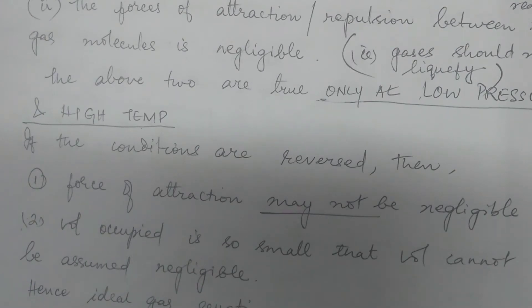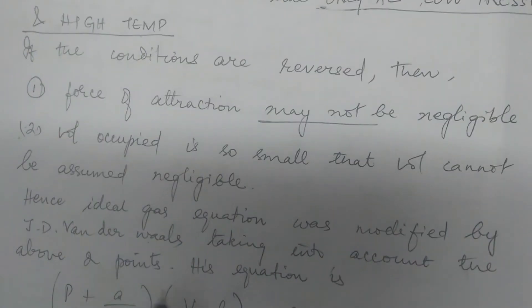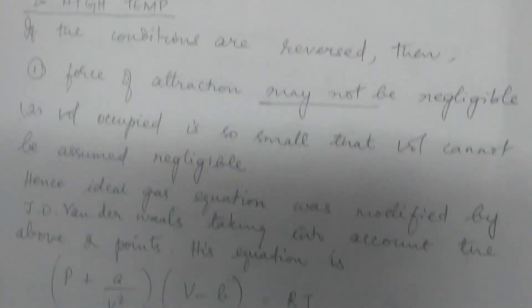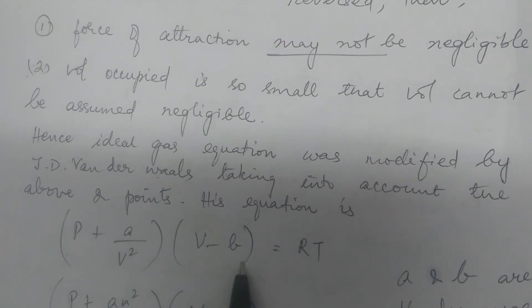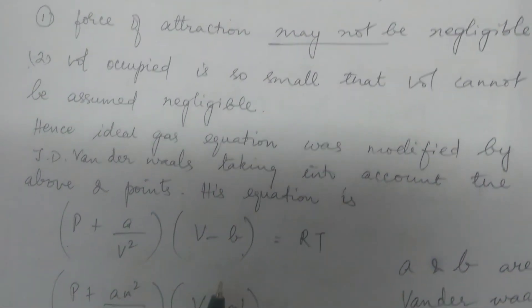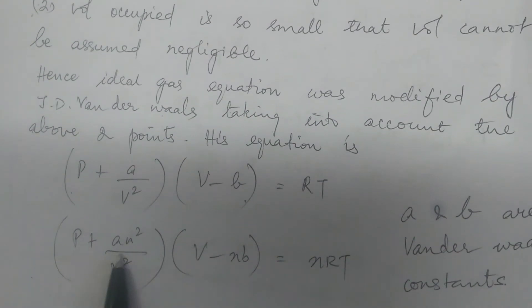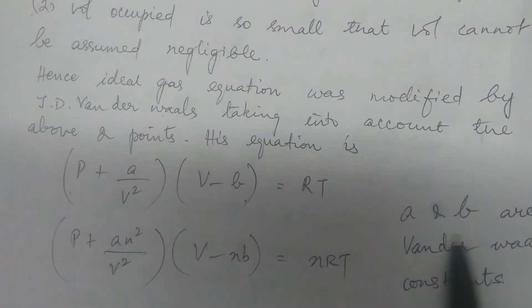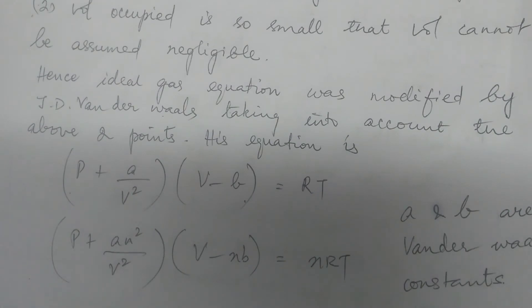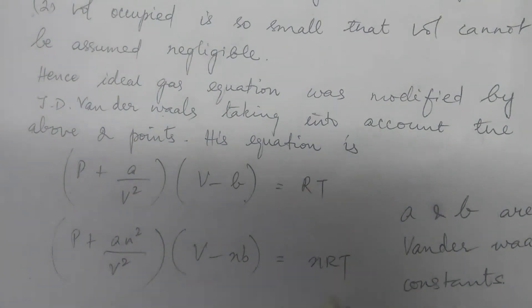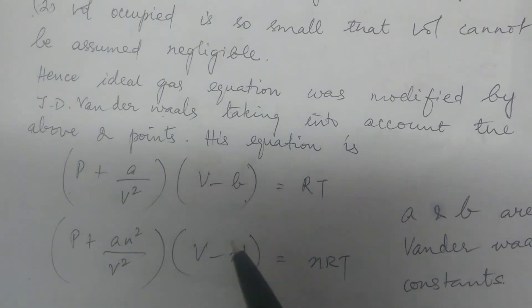J. D. Van der Waals was the one who modified the ideal gas equation. He considered the above two points and modified the equation as: (P + a/V²)(V - b) = RT for 1 mole of a gas. For n moles, the equation becomes: (P + an²/V²)(V - nb) = nRT. Here, A and B are called Van der Waals constants, where A depends upon intermolecular forces and B depends upon the size of the molecules. This will be discussed further in the next lecture.